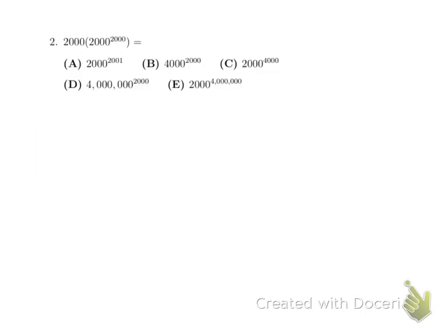Let us move on to number 2. Here we have 2000 times 2000 to the 2000 power. It looks a little bit confusing, but if you look at it carefully, here we have 1 hidden as an exponent. So therefore, we have 2000 to the first power times 2000 to the 2000 power, then we get 2000 to 2001 power, which is choice A.